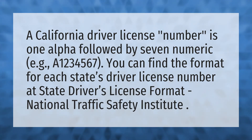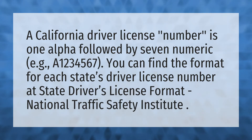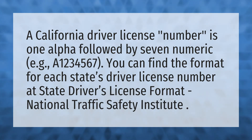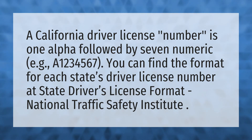A California driver license number is 1 alpha followed by 7 numeric, e.g. A1234567. You can find the format for each state's driver license number at State Drivers License Format, National Traffic Safety Institute.